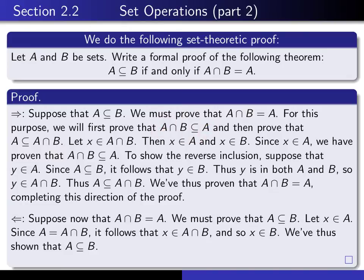To prove that A intersect B is a subset of A, let X be an element of A intersect B. By definition of intersection, X is in A and in B. The important fact is that X is in A, so we've proven that A intersect B is a subset of A. Notice this direction of the proof didn't make any use of the hypothesis — in fact, it's always true that an intersection of two sets is a subset of either one of the two sets.